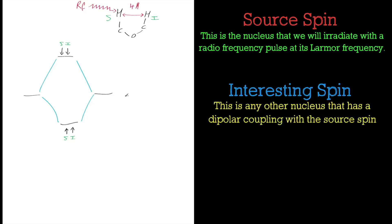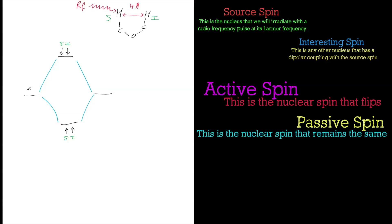In the ground state, we should have both nuclei as spin up. In the higher energy state, we should have both nuclei as spin down. I'm labeling these as source and interesting because it'll be very important when we're discussing the NOE effect. We have two other possible states: if the source spin flips and the interesting spin stays the same, then the source spin is called the active spin and the interesting spin is the passive spin.